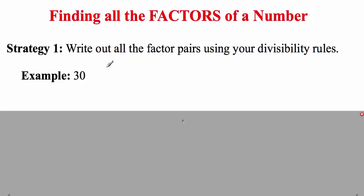You will often be asked to find all the factors of a number. In this first strategy, we are going to write out factor pairs using your divisibility rules. We're going to look at the number 30 and go through the divisibility rules you learned yesterday. We know that all numbers are divisible by 1, so we're going to start with that. 30 divided by 1 is 30, so 1 times 30 is also 30.